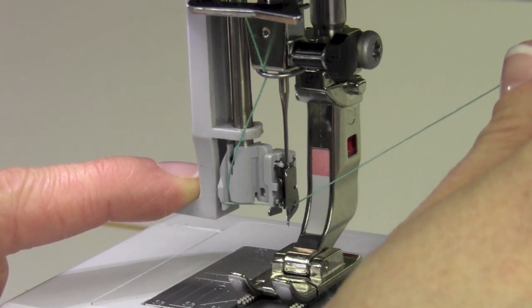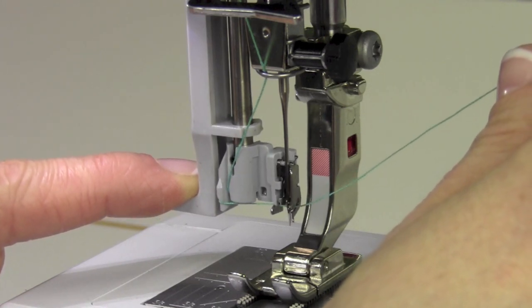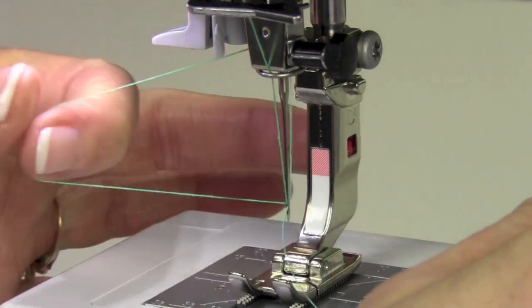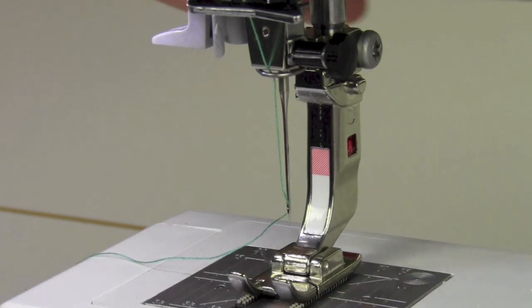I'm holding onto this thread very gently with my right hand and as I let go with my left hand, that will pull a loop all the way through to the back side. Then we're ready to sew.